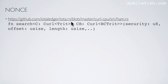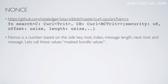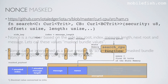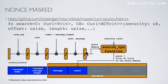The nonce is calculated in this file in the search function. Nonce is a number based on the side key, root, index, message length, next root, and message — let's call these values the masked bundle values. Nonce can be interpreted as a value created by scrambling these masked bundle values in a specific way using the security level. The nonce is the first 81 trites of the state memory and is stored in this field.